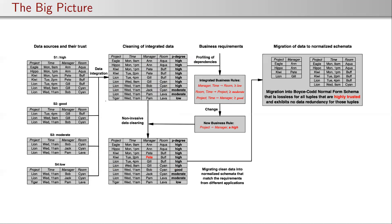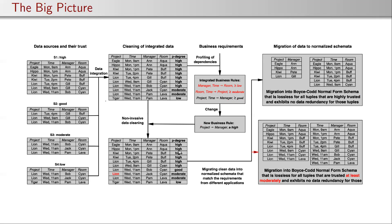We can now apply schema design to differently trusted data. If we want to normalize only highly trusted data, all these rules apply and this value here is redundant — we apply typical normalization and get a Boyce-Codd normal form schema. But if we normalize all data that is at least moderately trusted, only the first two rules hold, a different value becomes redundant, and we get a different schema design. It really depends on the certainty degrees we attach to the functional dependencies.